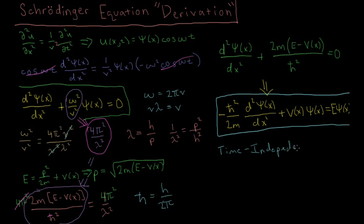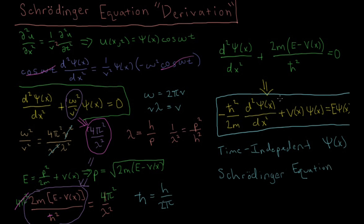By solving this equation for psi of x, the wave function, we're going to get a function back which gives us everything we can possibly know about the properties of a particle — its energy, kinetic energy, average potential energy, average momentum, average position, and so on. This is the fundamental equation we're going to be working with for pretty much the rest of this video series on quantum chemistry.